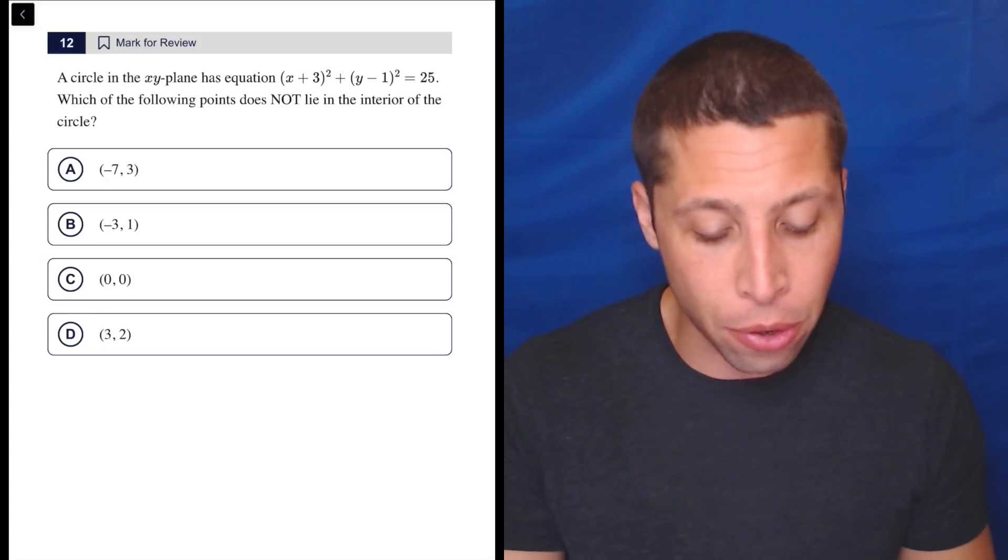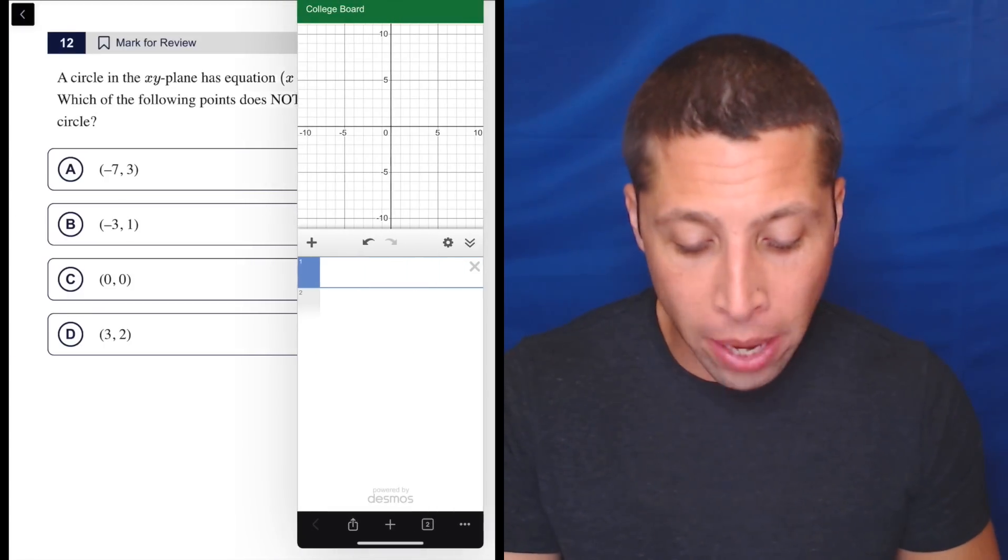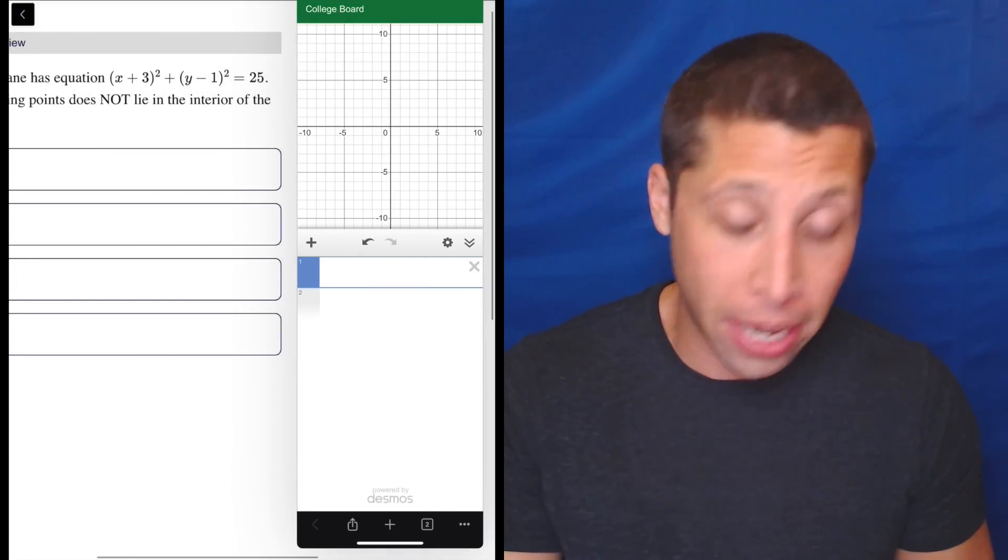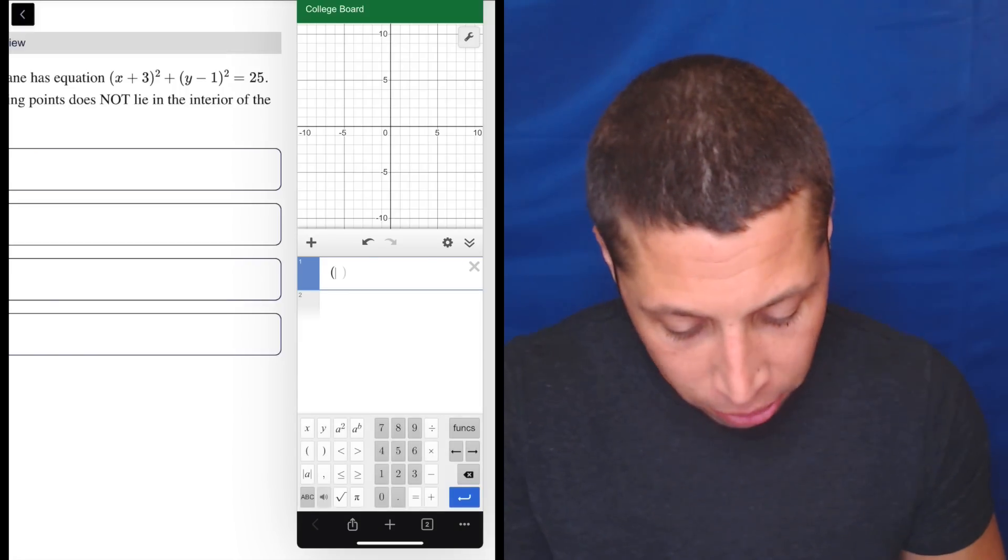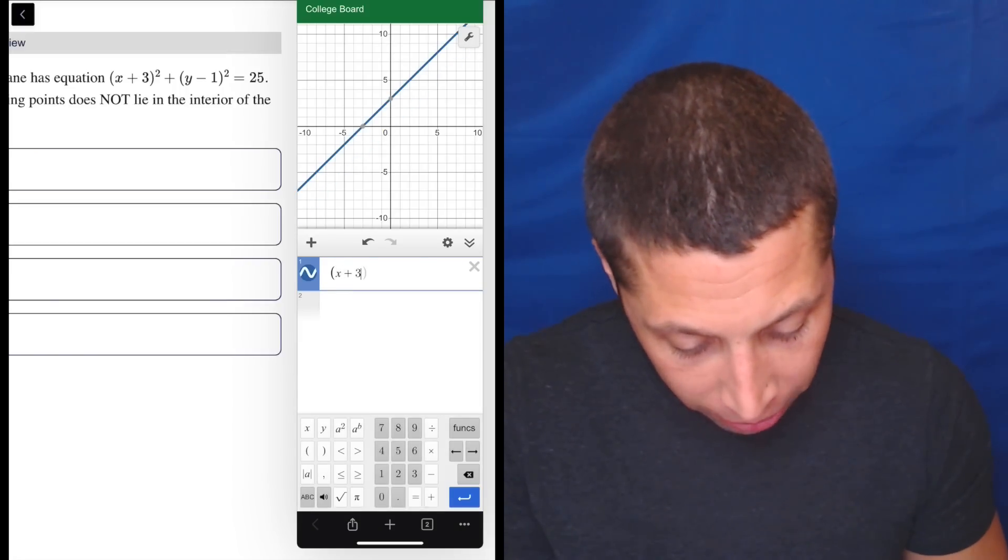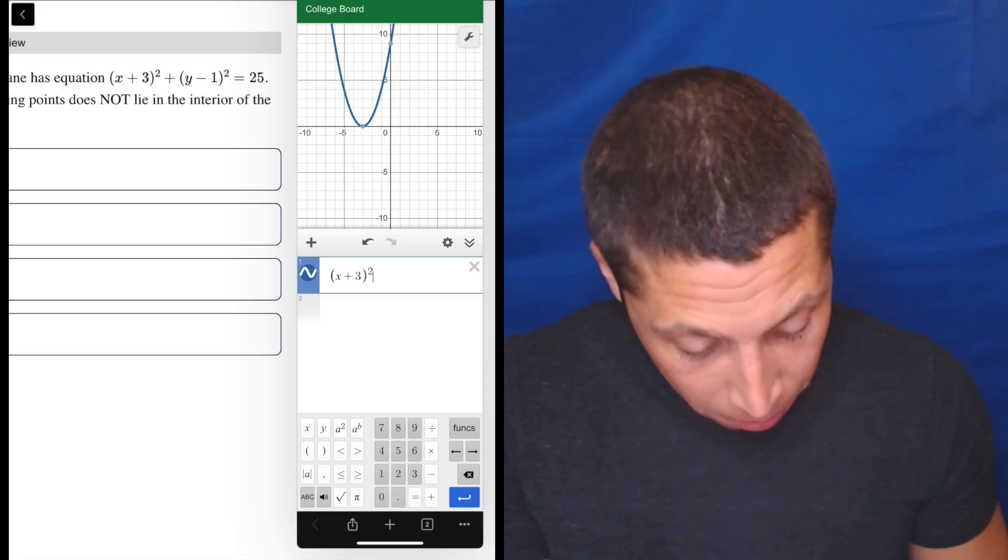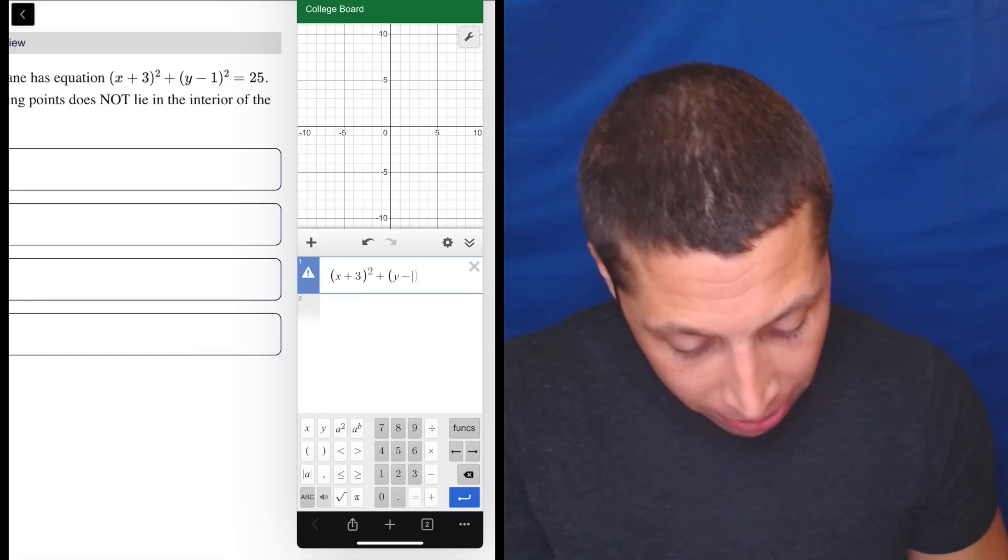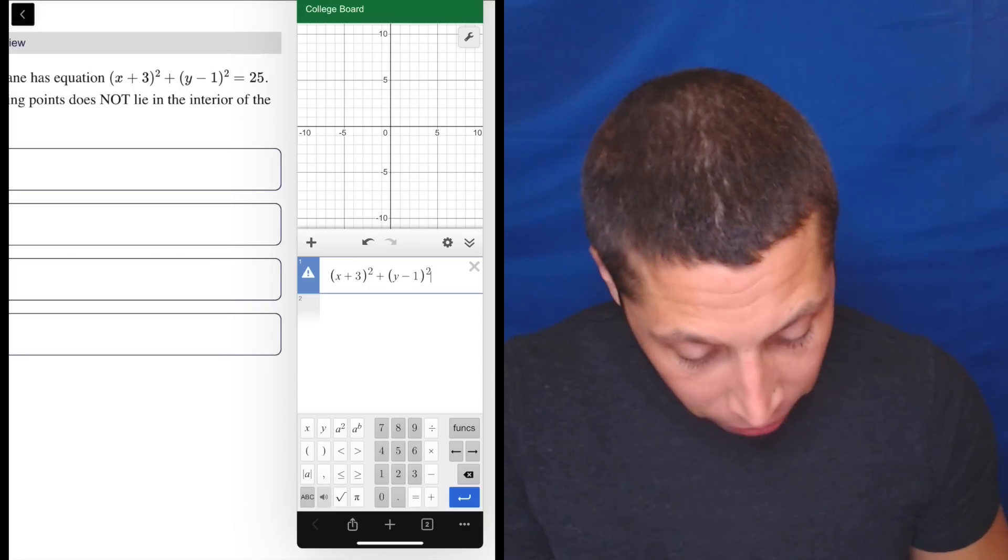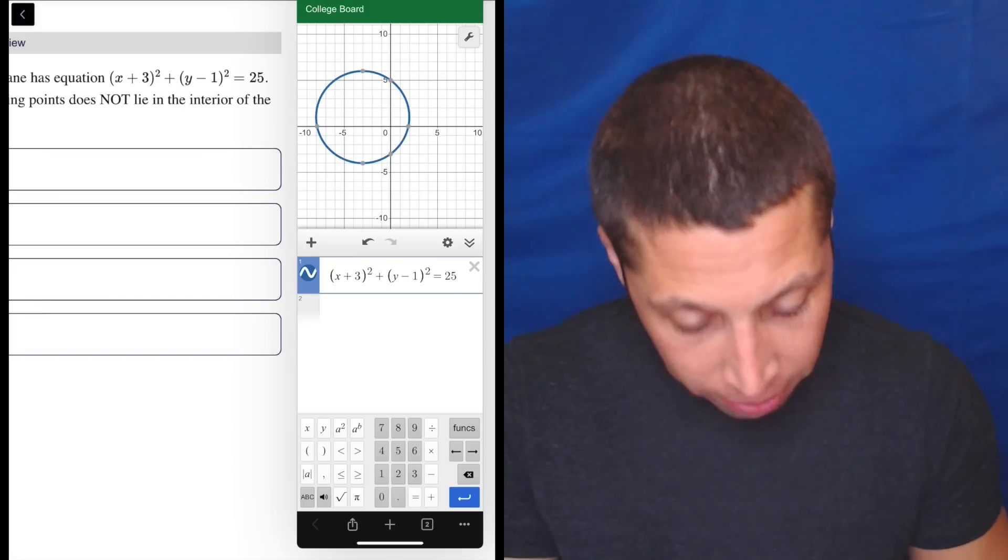So this is definitely the way I would do it. I will show you the non-Desmos way because it might come in handy in a certain case, but basically I'm just going to do x plus 3 squared plus y minus 1 squared equals 25. Draw my circle for me. There it is. Beautiful circle.